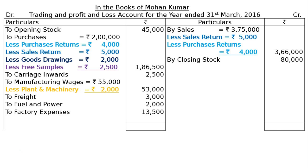Total the credit side: rupees 4,46,000. Write it in the debit side. Find out the difference — the gross profit carried down is rupees 1,40,500.